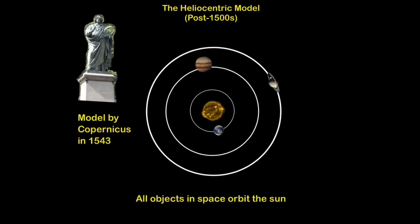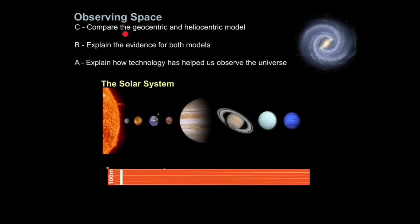We call this model the heliocentric model. Helio refers to the word sun. And this model states that all objects in space orbit the sun. Now even this model wasn't entirely correct, but it was certainly a huge step in the right direction. So that's how we compare the geocentric and heliocentric model, earth-centered or sun-centered.